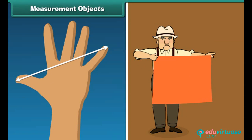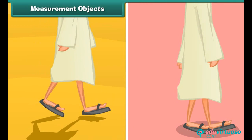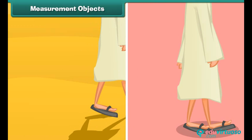Objects can be measured in different ways. You may use your hand span, or you may use your arm. You can even use your step for measurement, or simply your feet can be used for measuring distance. All these can be used to measure lengths.